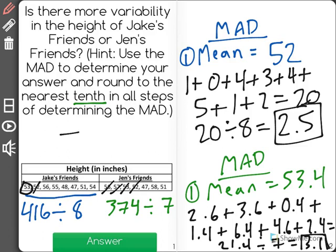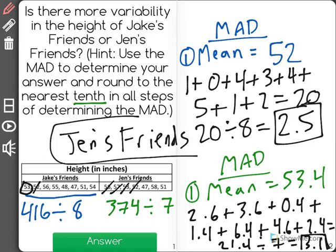This means that Jen's friends have a higher variability or more variability in their data set than do Jake's friends.